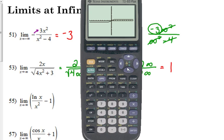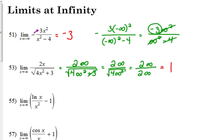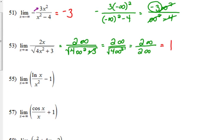I would like for you to understand this, but if you don't, we're just going to show you how to graph it and look at the graph. Let's look at 55. We have the limit as x approaches infinity of the natural log of x over x squared minus one. Let's plug it in and see what happens.